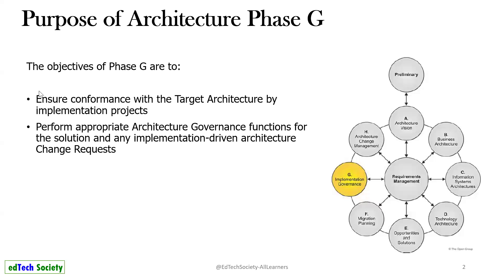So now let's deep dive. What is the purpose of Phase G? The main purpose is to ensure conformance with the target architecture by implementation projects. By the end of Phase G, the enterprise architect needs to ensure that Phase G establishes the connection between the architecture and whatever has been implemented — confirming it matches the final target architecture. The key phrase is 'ensure conformance with the target architecture.' Another purpose is to perform appropriate architecture governance functions for the solution and any implementation-driven architecture change requests.